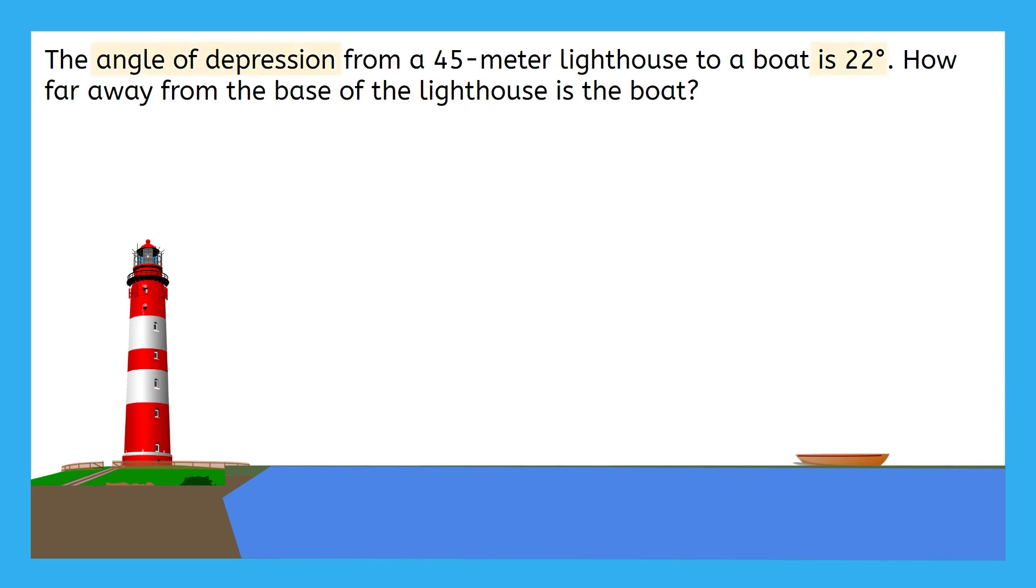Here's my sketch of the angle of depression. Here's the height of the lighthouse. And I chose to use x as the variable and labeled the distance between the lighthouse and the boat as the unknown value.